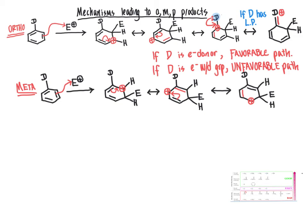What you will notice about these resonance structures is that none of them place the positive charge on the carbon that is bonded to the directing group. In the left structure, no positive charge on the directing group carbon; in the middle structure, same situation; and in the right structure, again no positive charge on the carbon bonded to the directing group. So all three resonance structures for the meta pathway avoid placing the positive charge on the carbon that has the directing group — a completely different situation than in the ortho pathway.